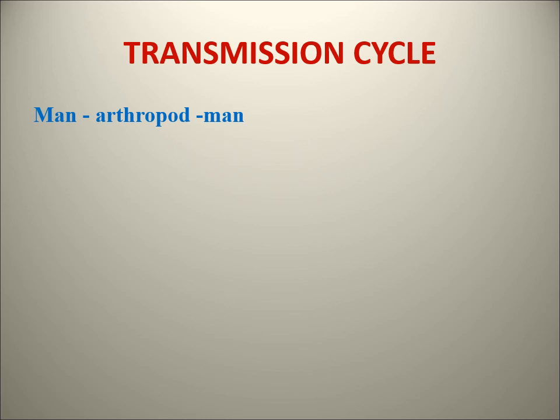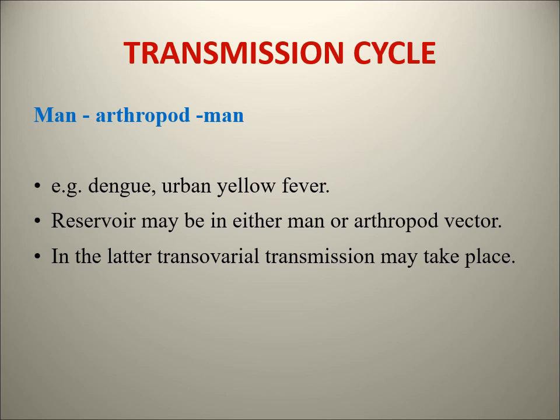The main transmission cycle for arboviruses is arthropod to animals and man. Usually man is the accidental host. But in a few diseases like Dengue, man is the main host and the cycle is just man-arthropod-man - there is no animal involved. The mosquito takes the infection from man, and from the man it goes back to the arthropod. This cycle is seen in Dengue and Yellow Fever, where the reservoir may be either the man or the arthropod vector.